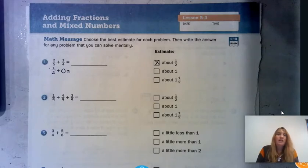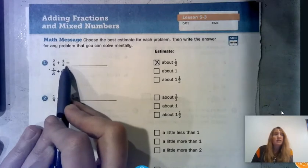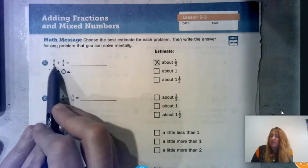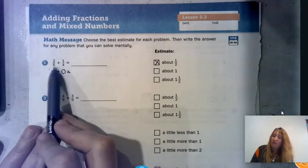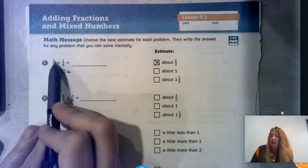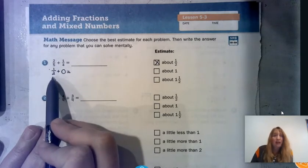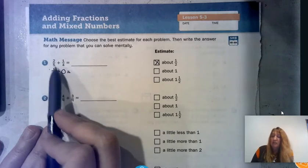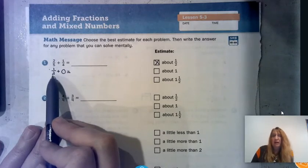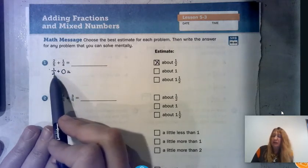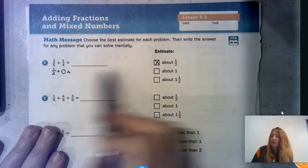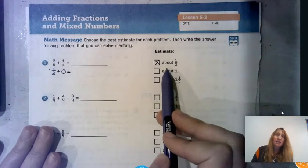The first one is already done for us. We have two-fifths plus one-fourth. The denominators are not the same, so we can't add those — we'd have to rename. But we can make an estimate: two-fifths is almost half because half of five is two and a half. One-fourth isn't very much, so I'll put zero. Half plus hardly anything is still about a half.